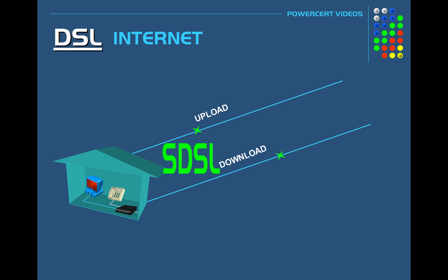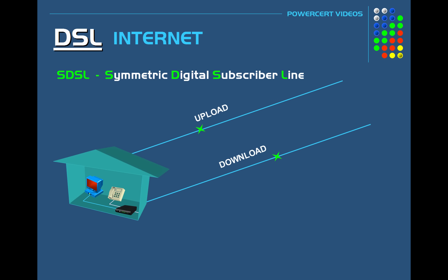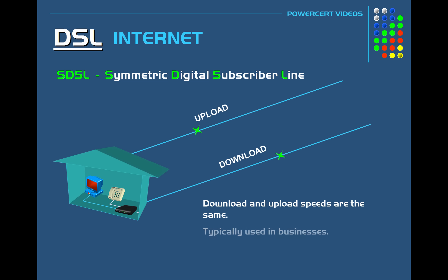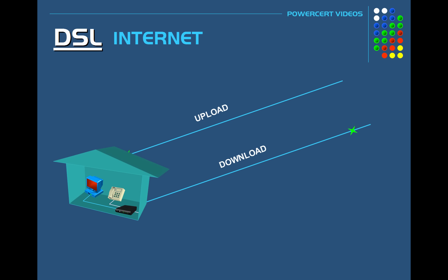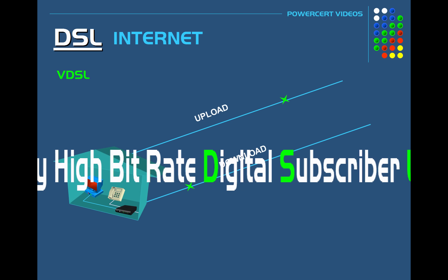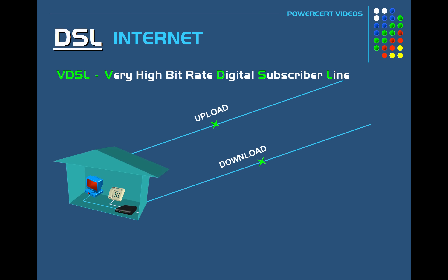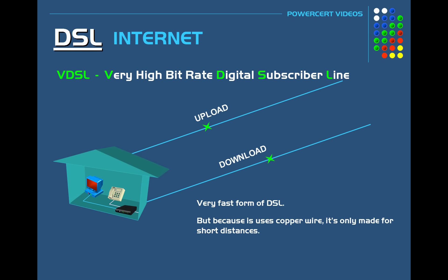There's also SDSL, which stands for Symmetric Digital Subscriber Line. As the name implies, the download and upload speeds are the same, and this type of DSL is typically used in businesses. And there's VDSL, which stands for Very High Bit DSL. This is a fast form of DSL that runs over copper wire, and because it uses copper wire, it's really only made for short distances — though for long distances it can also use fiber optic cable.